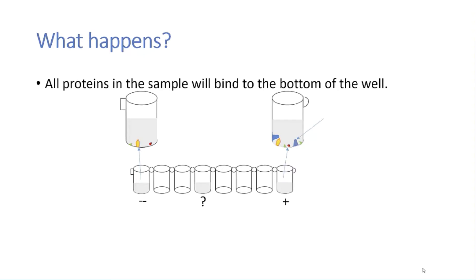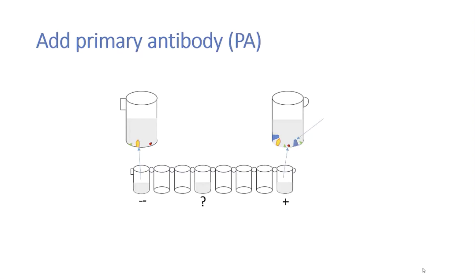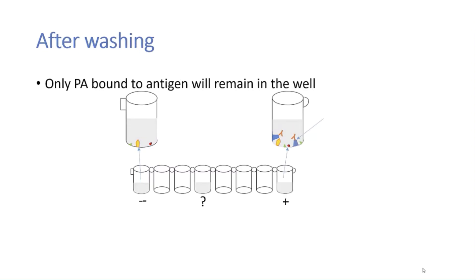All the proteins in the bodily fluids will bind to the bottom of the well, regardless of whether it is the antigen or not. The primary antibody is then added and binds to the protein, the antigen, if it is present. If there is no protein present, there is nothing to bind to and the antibodies will just float around in the liquids. Then the wells are washed, and after washing only primary antibody that is bound to the antigen will remain in the well.